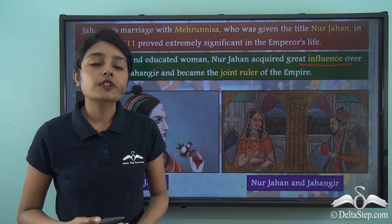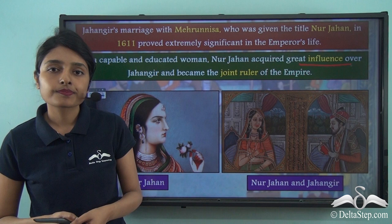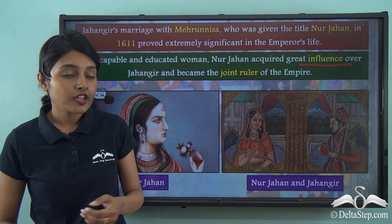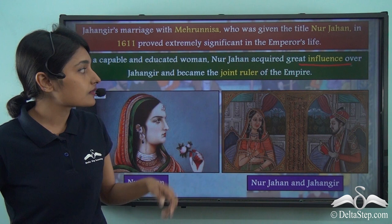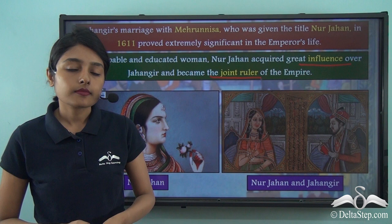As a very capable and educated woman, Nur Jahan acquired great influence over Jahangir. This was further amplified by Jahangir's alcoholic lifestyle. When Jahangir was leading a severely alcoholic life, it was his wife and royal consort Nur Jahan who gained power in the Mughal Empire — so much so that she eventually became the joint ruler, placing many of her family members in important offices.